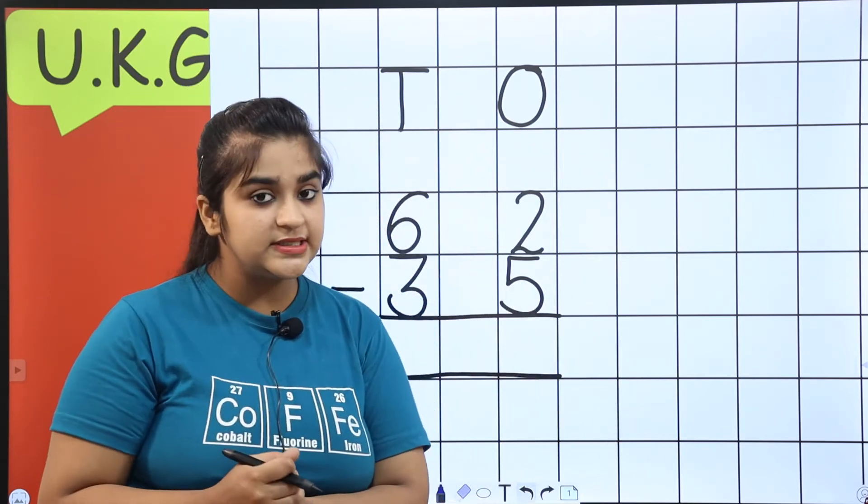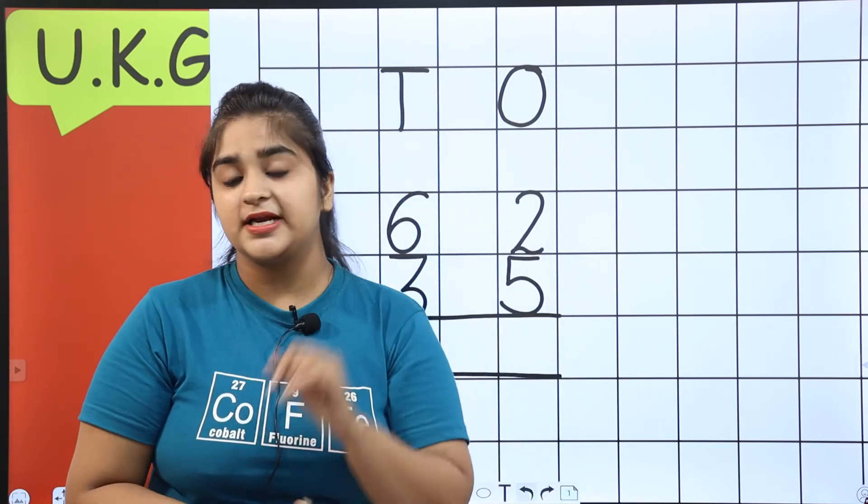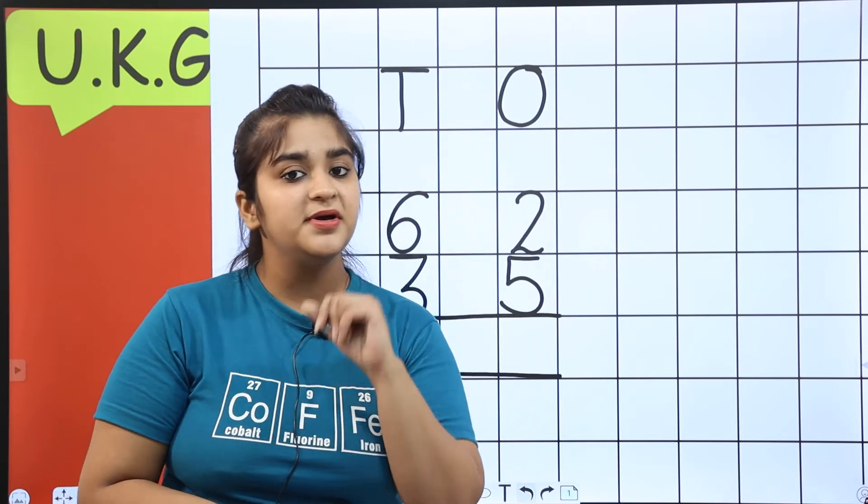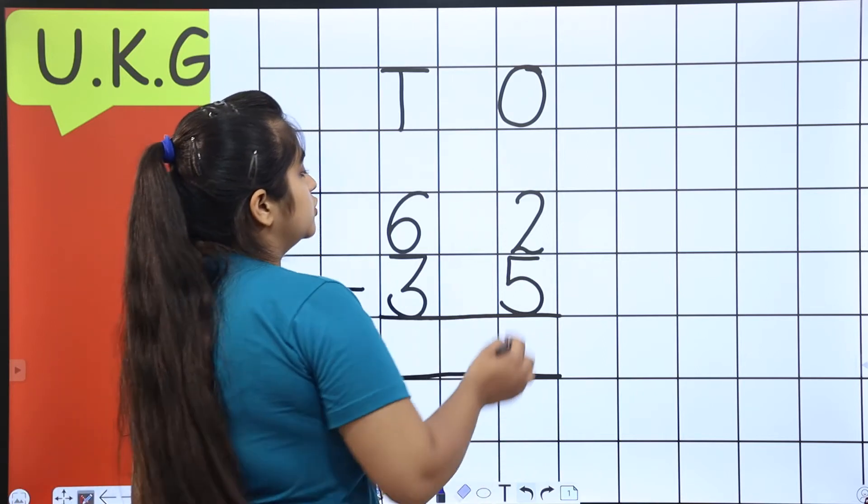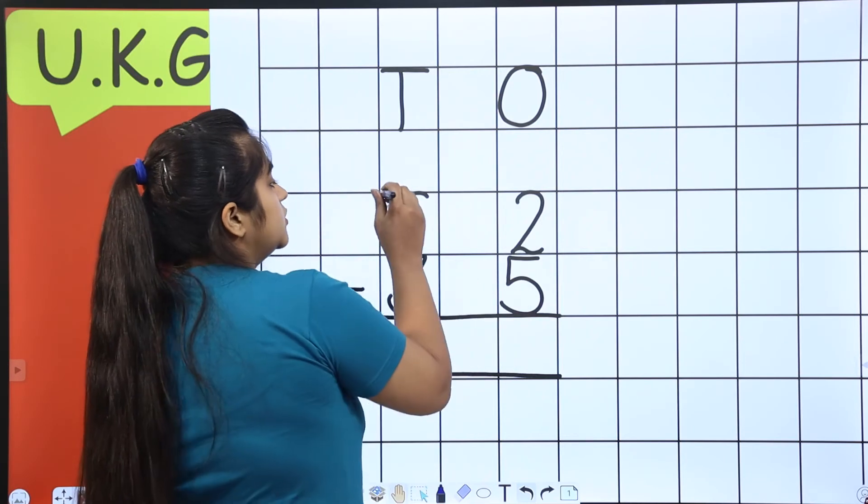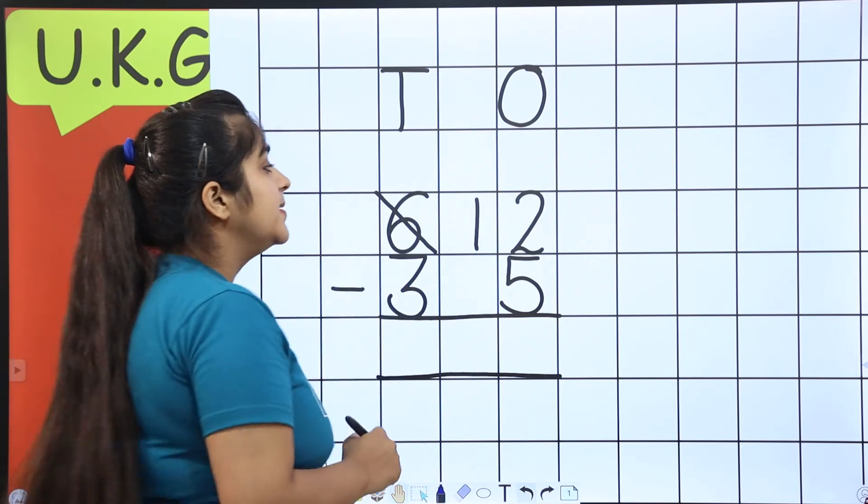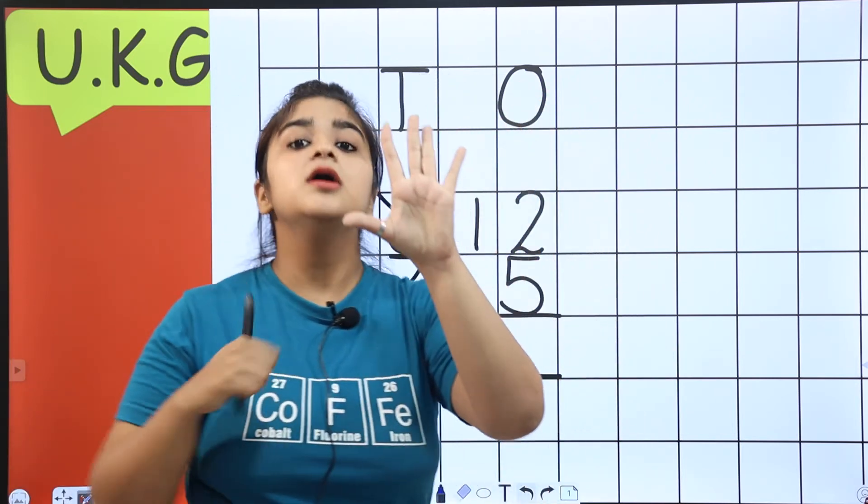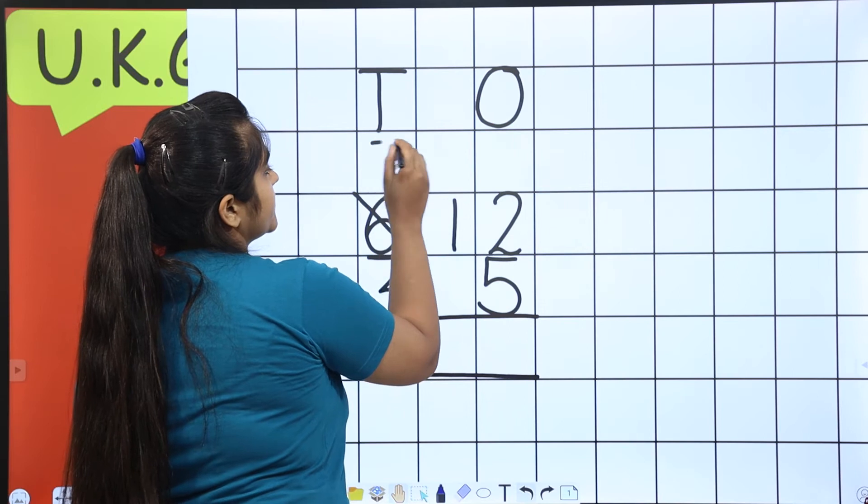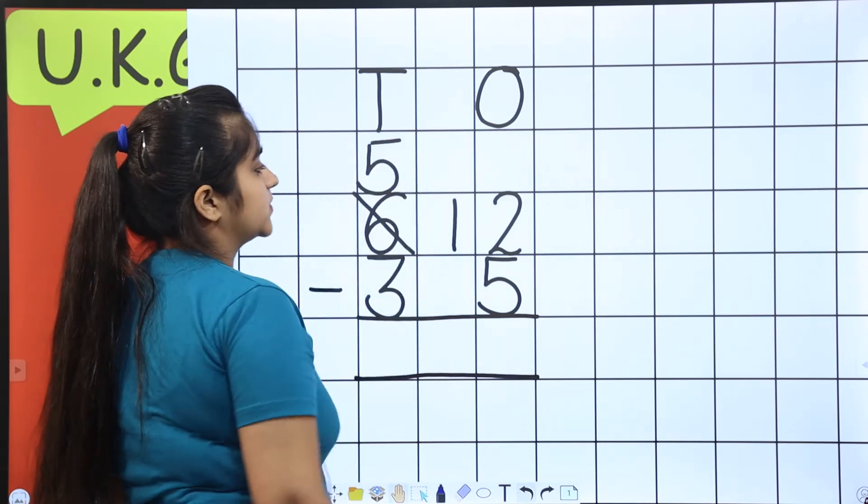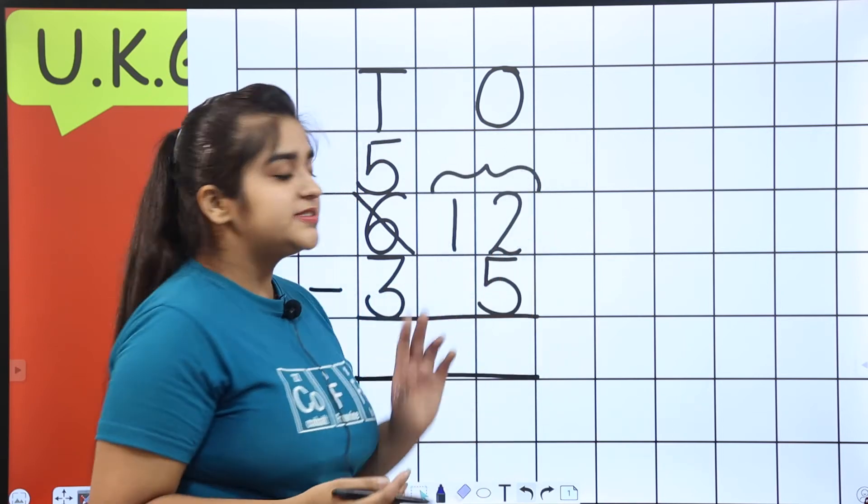Now, 2 minus 5. It cannot be subtracted. 62 minus 35 we have to subtract. But, 2 minus 5 cannot be subtracted. 2 is a smaller number, 5 is bigger. So, what will we do? 2 will go to its friend, and borrow. So, 2 goes to 6. And asks, give me 1. So, 6 says, okay. He gave his 1 to 2. But, when 6 gave his 1, how much was left with him? 5. So, what will we write here? 5. Write it on top. 5. Now, 12 minus 5, can 5 go into 12? Yes. There are 2 methods for this.